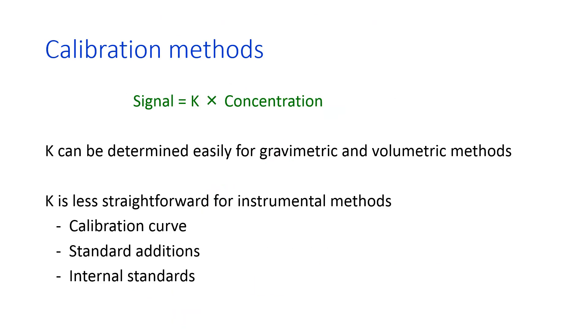The process of making a calibration curve is essentially figuring out the k in this equation right here. So for any method that you want to use, you want to be able to relate signal and concentration with some proportionality constant, call it k. For gravimetric methods, so weighing for titrations, this is very straightforward. It's pretty straightforward for a calibration curve and less so for other analytical methods.